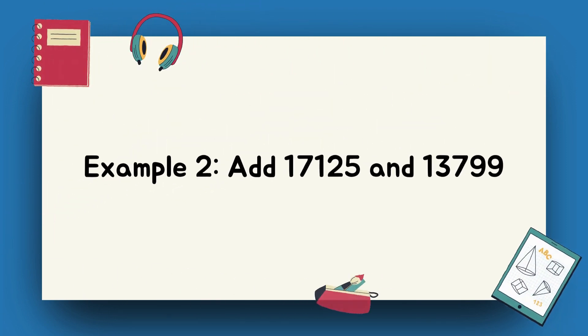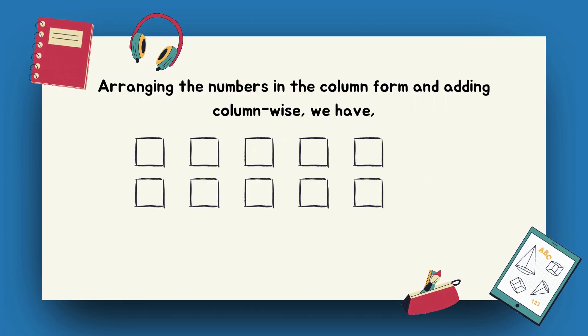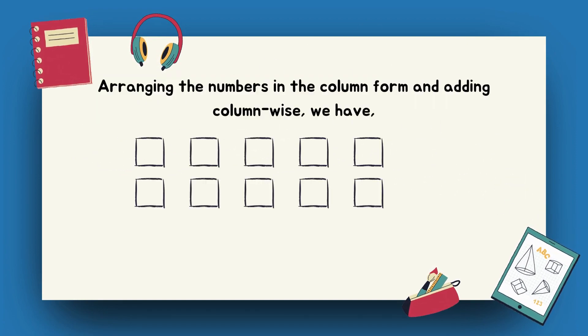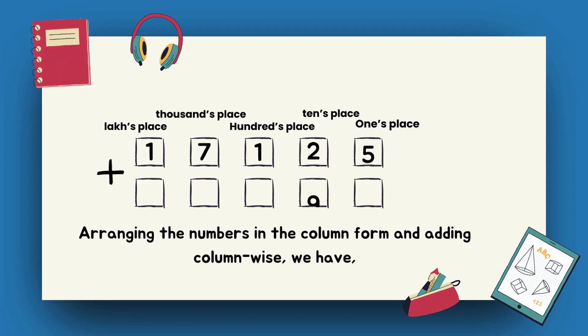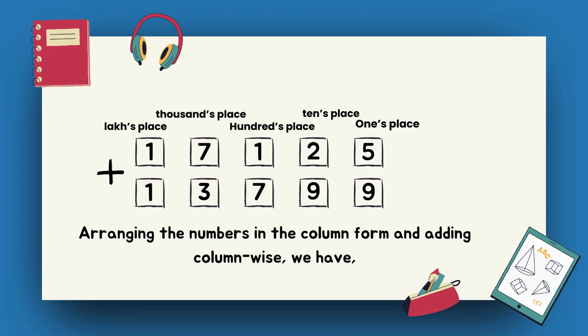Example 2: Add 17125 and 13799. Arranging the numbers in the column form and adding column-wise, we have 17125 plus 13799.